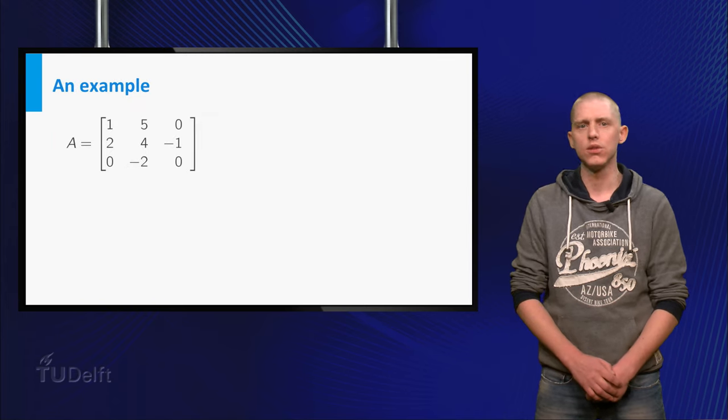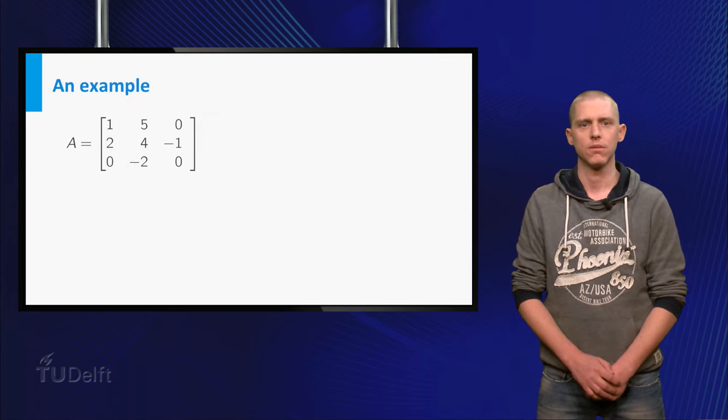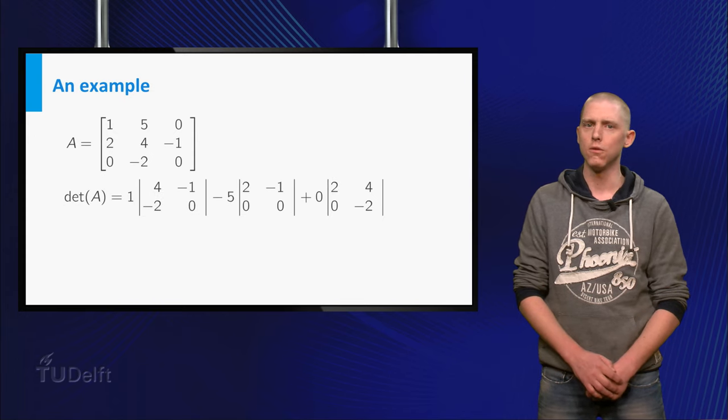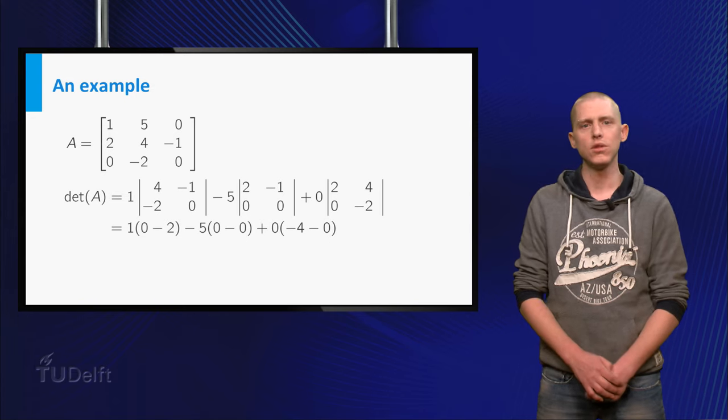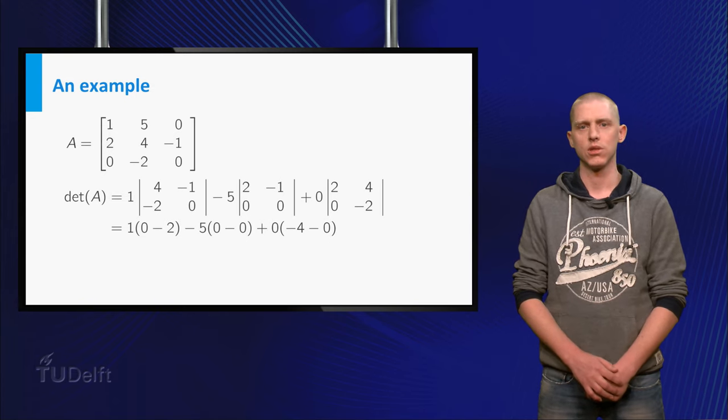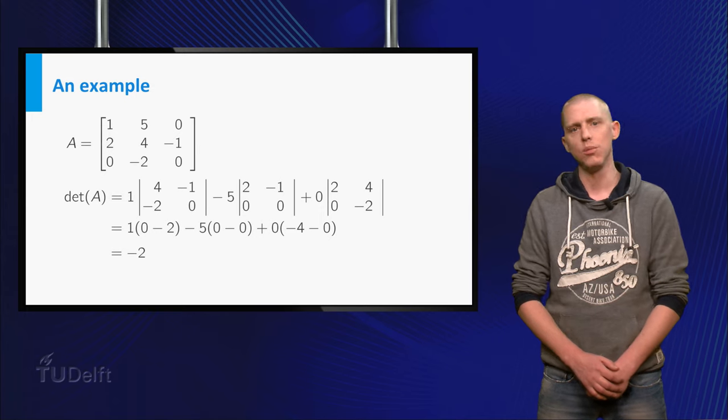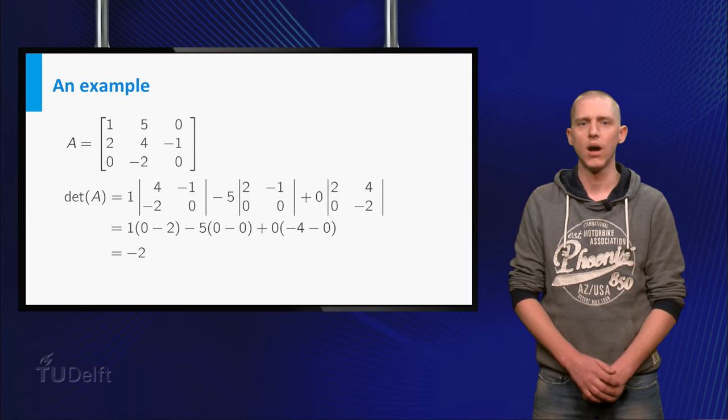Now you can calculate a determinant. Let's do a 3 by 3 matrix first. First you do the cofactor expansion over the first row. Then you use the formula for the determinant of 2 by 2 matrices. Finally, you simplify and end with the value minus 2.